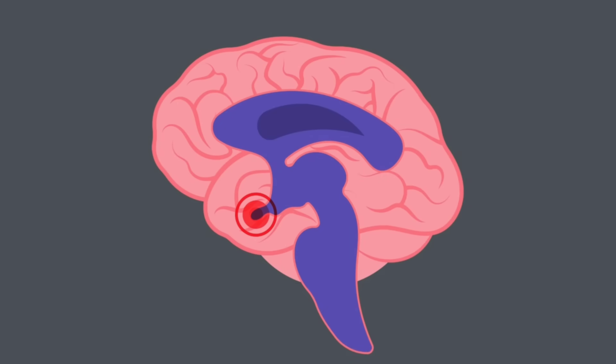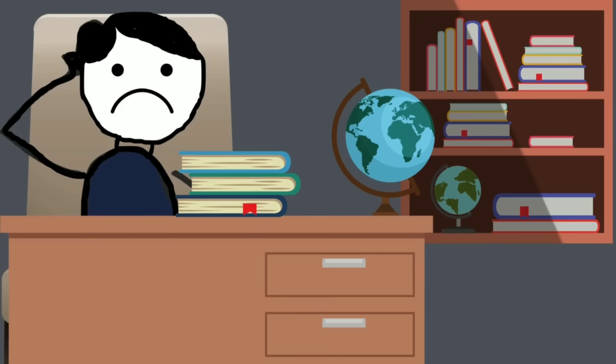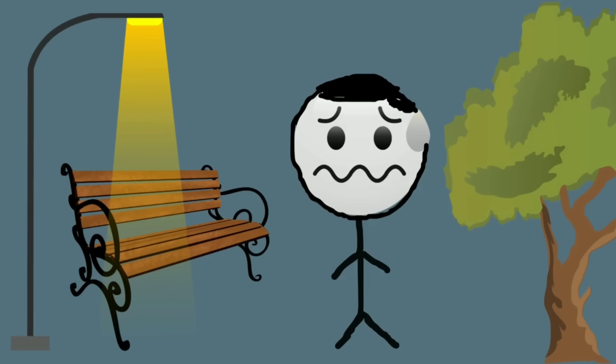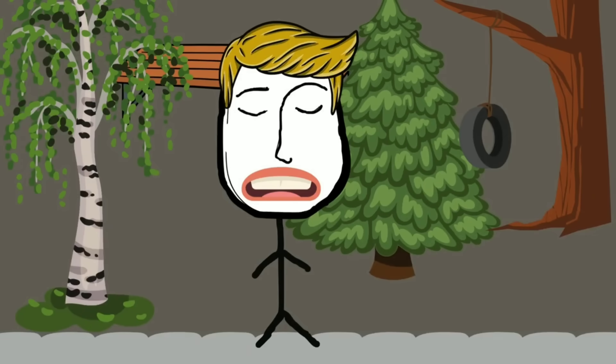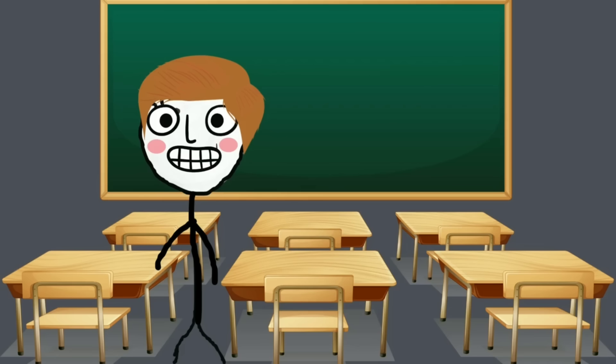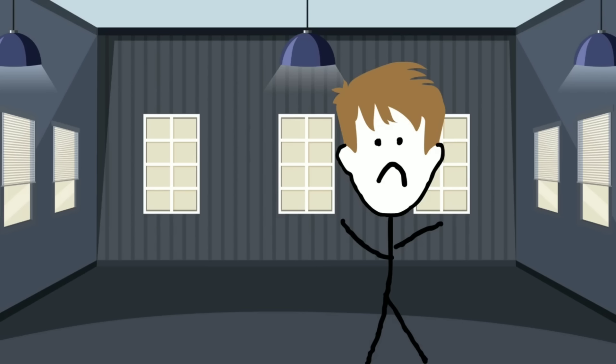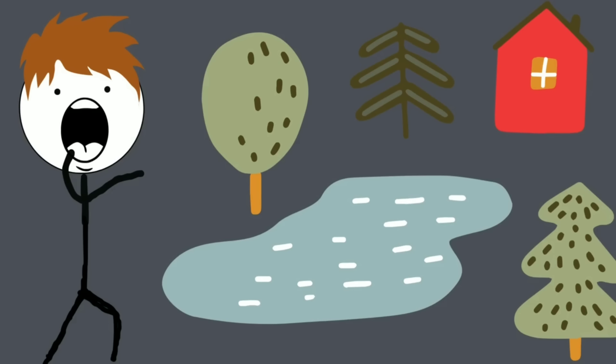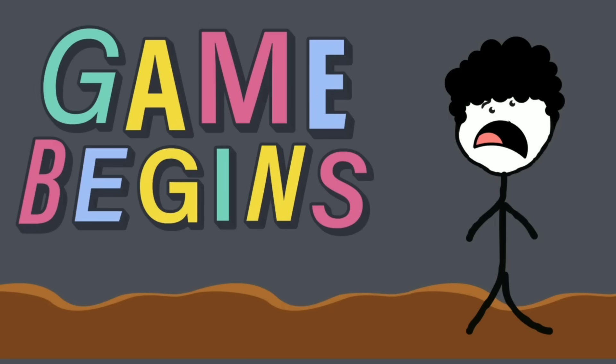Loneliness also activates the hypothalamus, which turns on your fight-or-flight response. Your body pumps out more cortisol, the stress hormone. Your heart beats faster. Your muscles tense up, as if you're preparing for a threat that never comes. In short, your brain thinks loneliness is a life-or-death emergency. It wants you to reconnect. But ironically, the same changes that are meant to protect you often make you withdraw even more. And this is just the beginning.